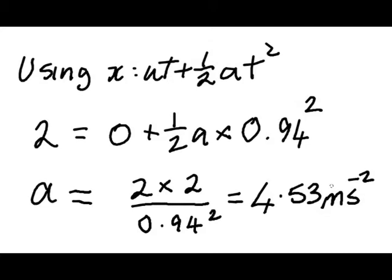Using x equals ut plus one-half at squared, with a displacement of 2 meters and an average time of 0.94 seconds, the acceleration turned out to be 4.53 meters per second squared.